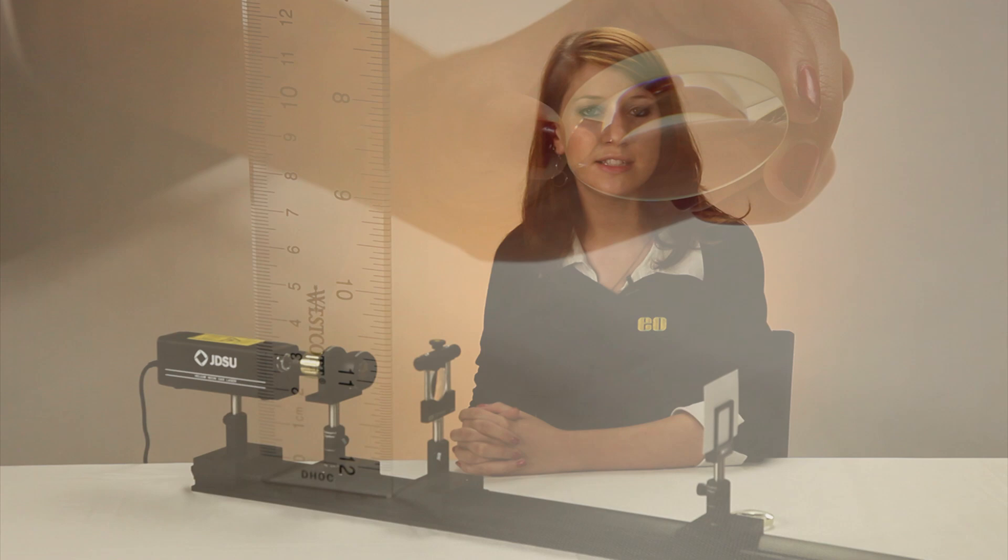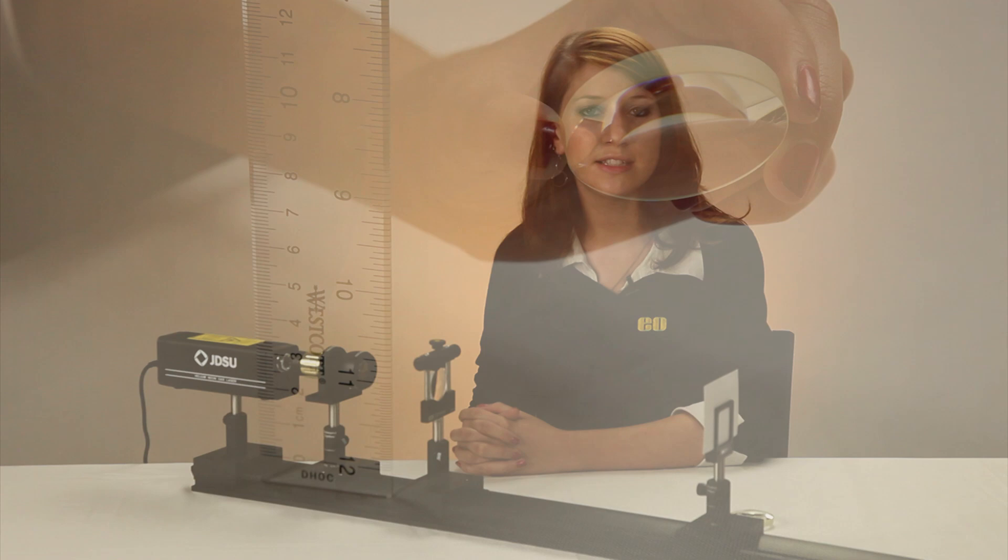An easy way to determine the approximate focal length of a lens is to use the overhead lights in a room, which are a distance much greater than 10 times the focal length of common lenses. The distance from the lens to the table when the light is in focus is approximately the focal length of the lens.